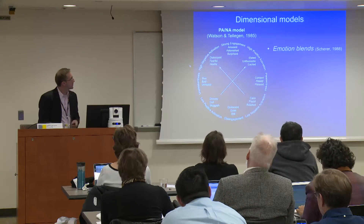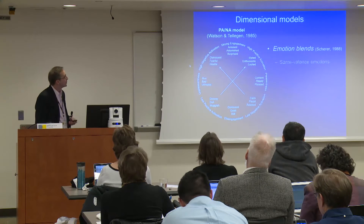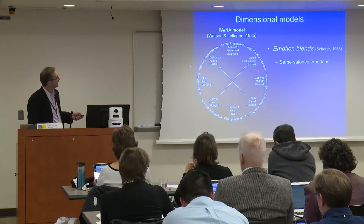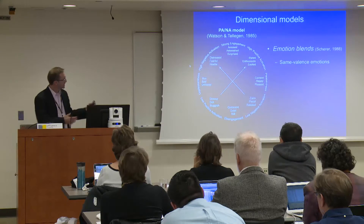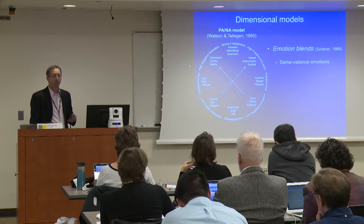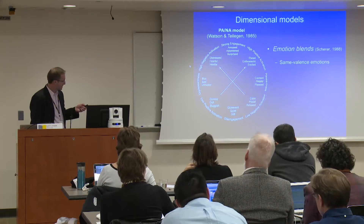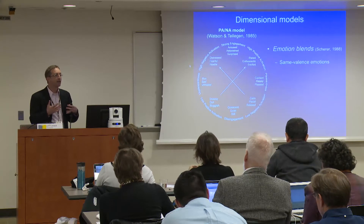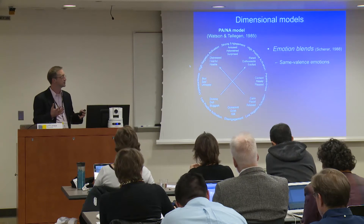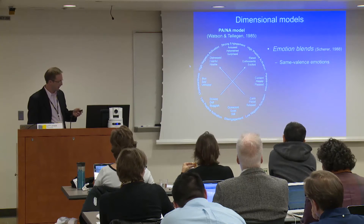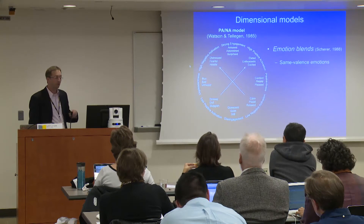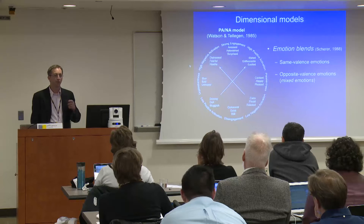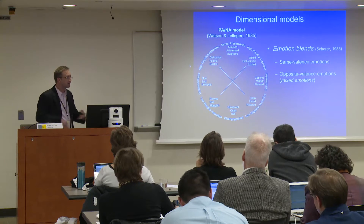This allows opportunity for emotion blends, both in terms of same-valence emotions. We can see here that neighboring emotions like elated and happy — these are data-driven models based on factor analyses of emotion ratings. The reason why elated is where it is and happy is where it is, is because in correlation matrices of people rating emotion intensity, they tend to be positively correlated.